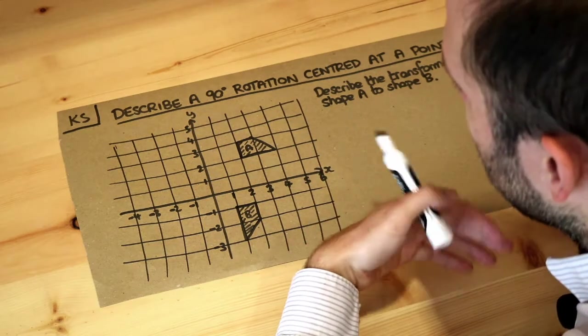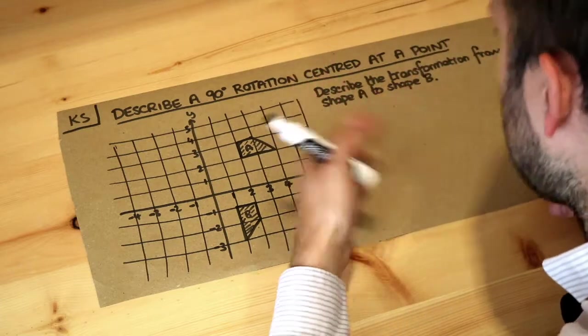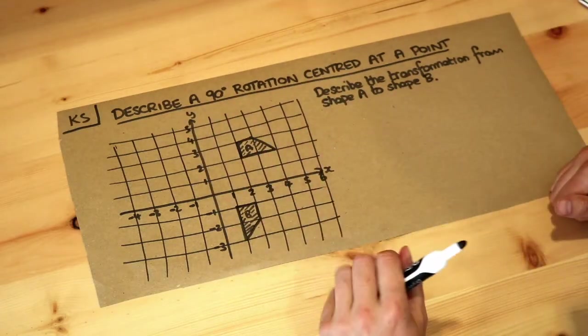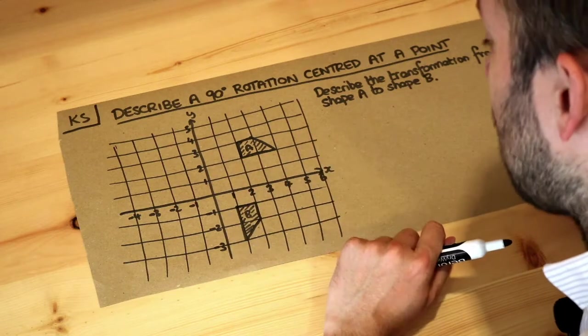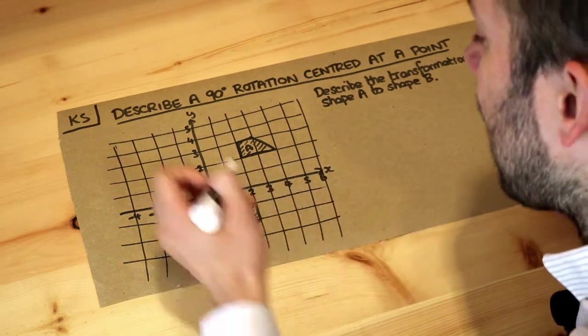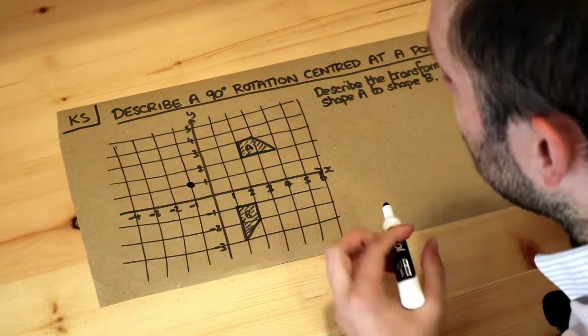Now there is some clever way of doing it by constructing perpendicular bisectors and such, but I'm not going to go through that method. We're just going to use a trial and error type method. So let's just guess that the center rotation was around about here.